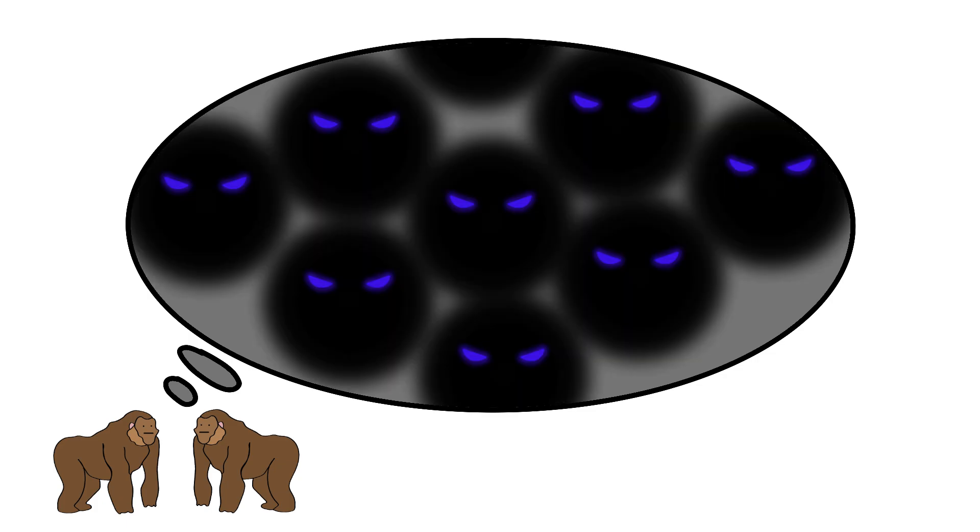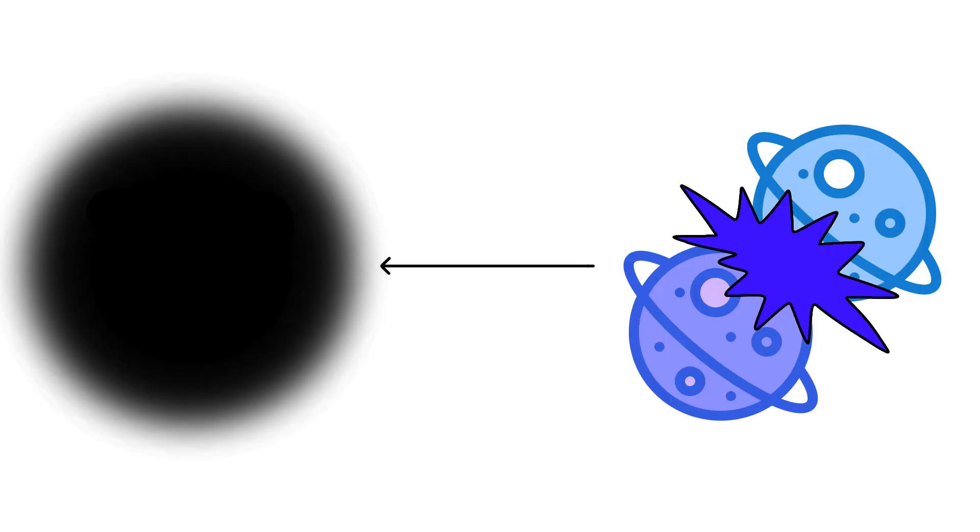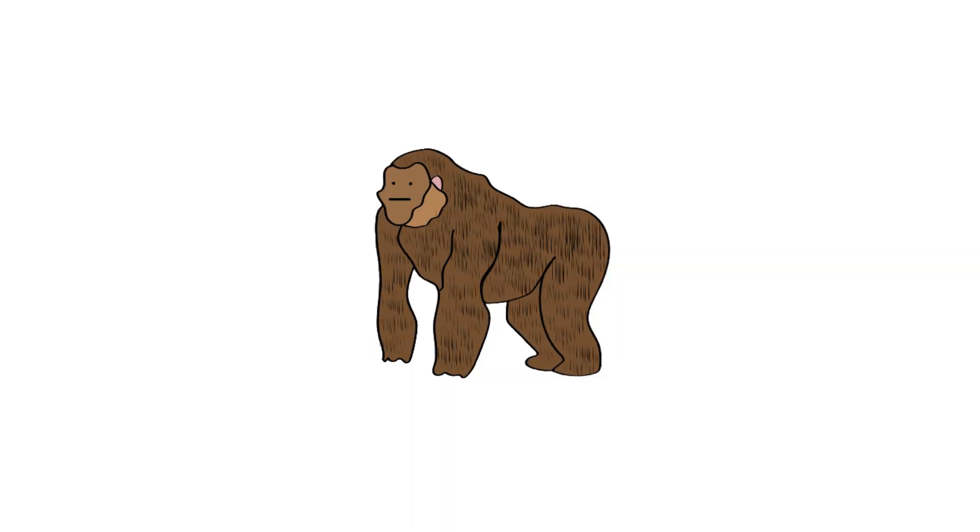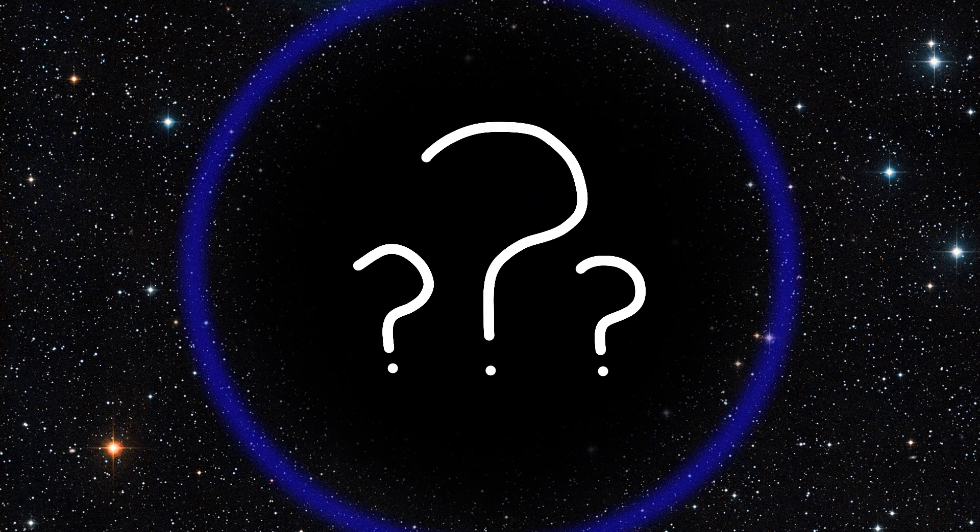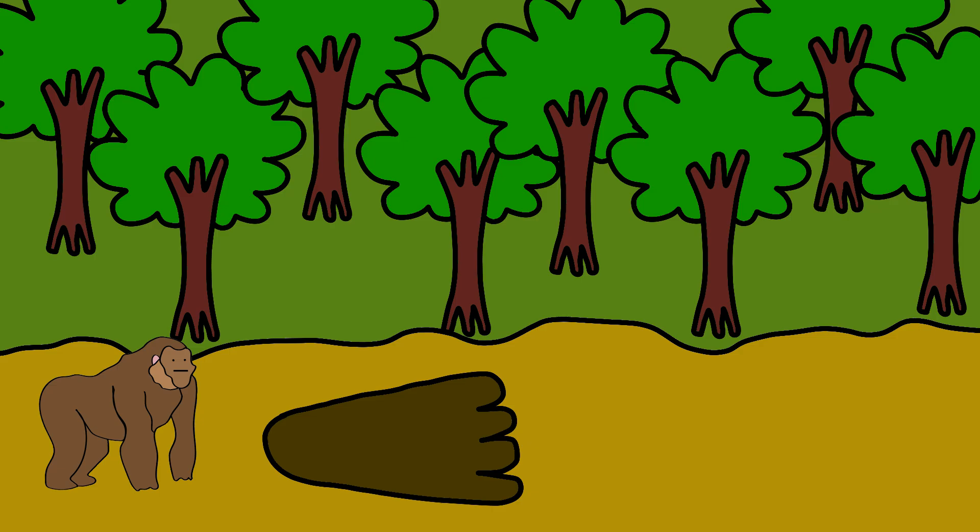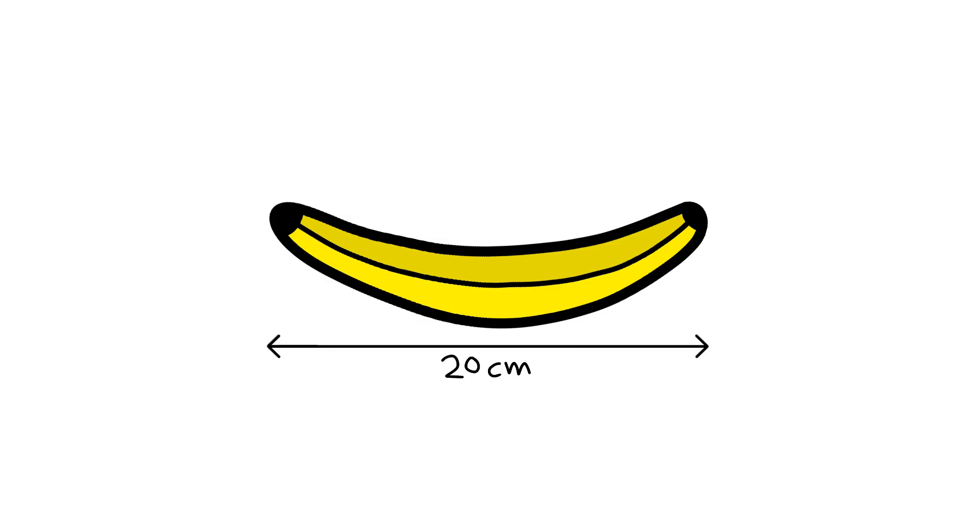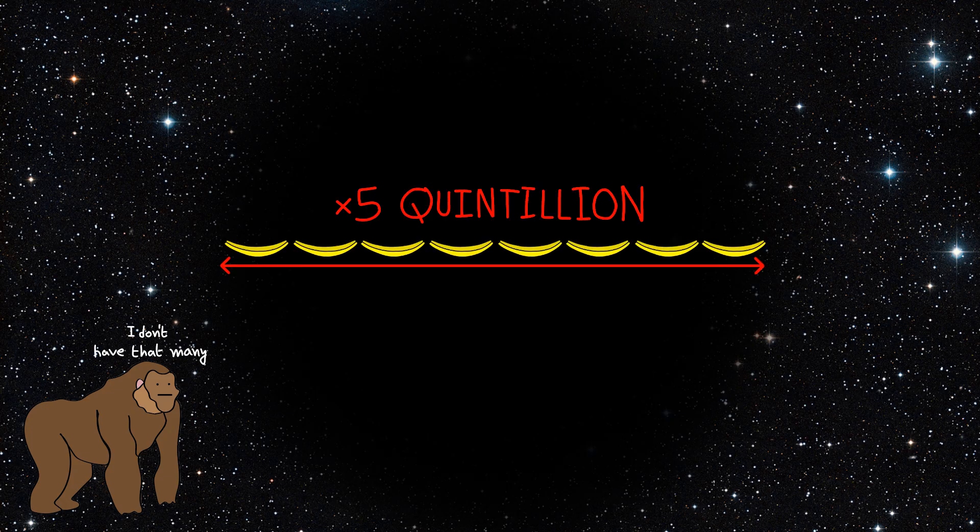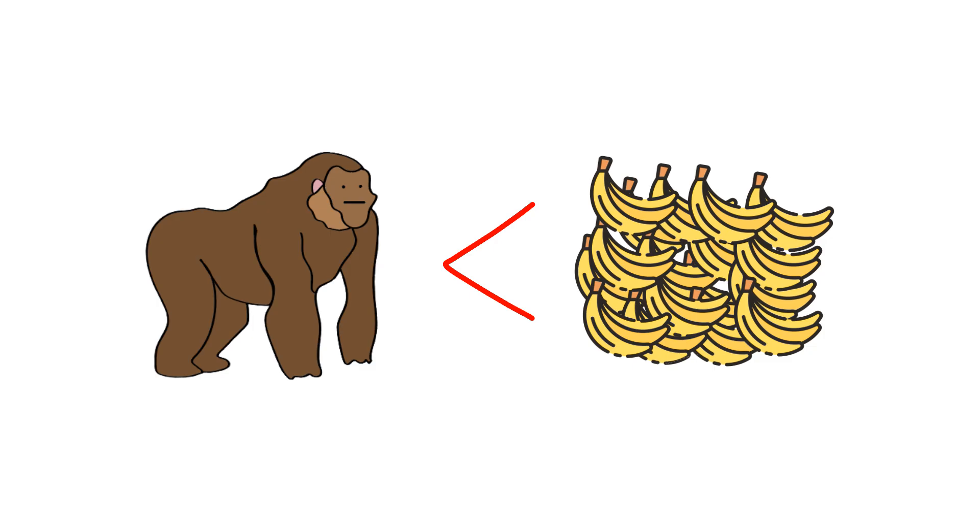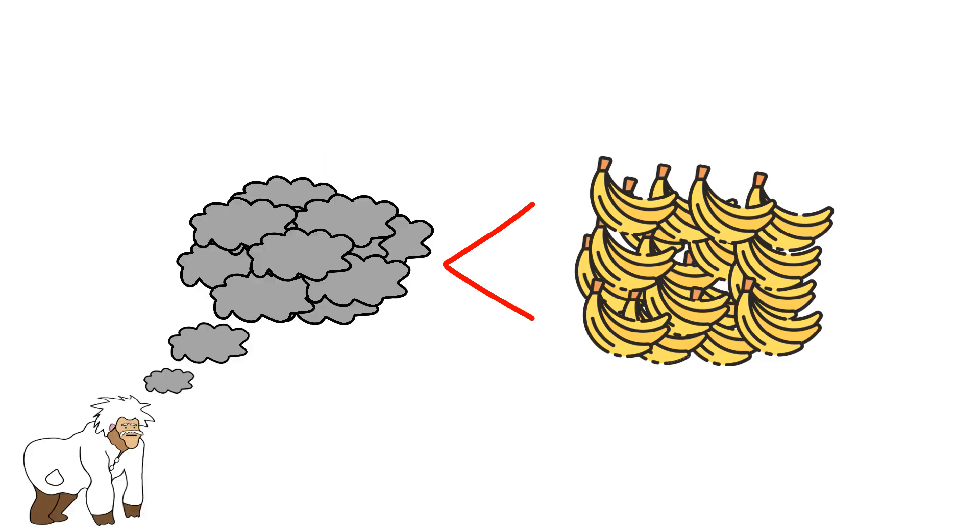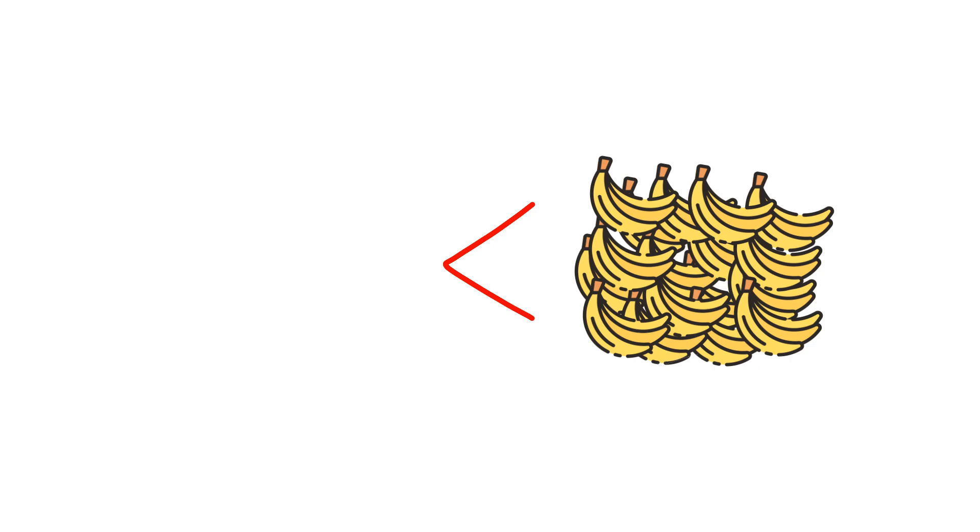Others whisper about more terrifying possibilities. Maybe this void is a scar left by a collision with another universe. Maybe it's a doorway to somewhere else entirely. What makes monkey's fur stand on end is that we're seeing effects of something we can't fully explain. It's like finding a giant monkey footprint in the jungle, but the footprint belongs to a monkey bigger than any monkey should be. If a single banana were 20 centimeters long, monkey would need five quintillion bananas to stretch across Eridanus Supervoid. That's more bananas than atoms in monkey's body.